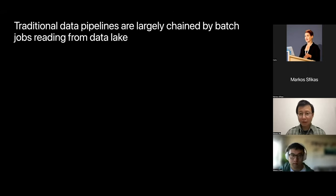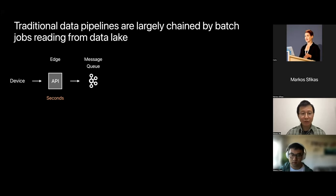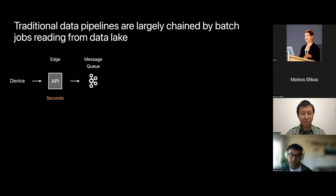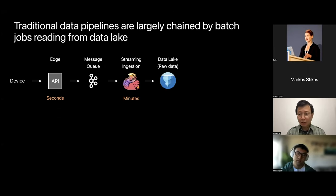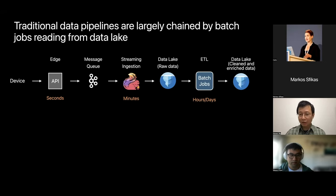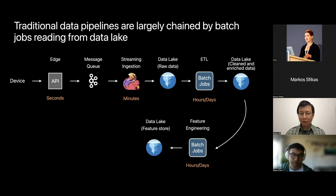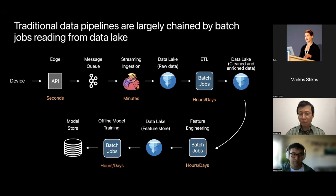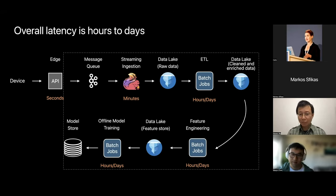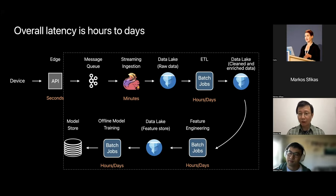Here's the traditional data pipeline that is largely chained by batch jobs reading from a data lake. We have devices send raw data to edge API services, which write raw data to a message queue like Kafka. Then we have a streaming service that reads data from Kafka and ingests it into a data lake — it could be Iceberg or any other data lake solution. After that, we may have multiple batch jobs for ETL, feature engineering, and offline model training. The end-to-end latency is typically at least a few hours, if not days, because of how typical batch jobs are scheduled, either hourly or daily.